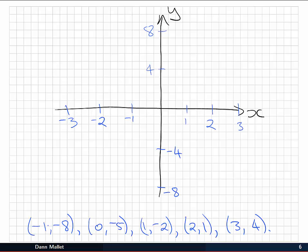Then we can start to plot these points. (-1, -8) means that I go across to x = -1 and then down to y = -8, so I can put that in there. Then (0, -5): x = 0 is here at the intersection, down to -5, which would be about here. (1, -2), which should be about here.